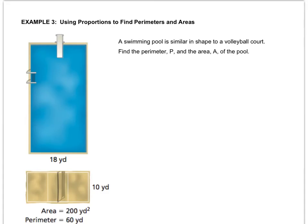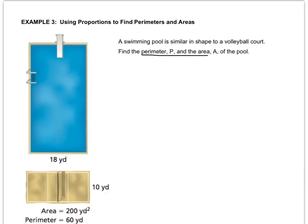Here's how we actually use this information about the relationship between perimeter and area. We've got a swimming pool and a volleyball court, and we're given just a couple of pieces of information: the pool measures 18 yards on one side, the volleyball court measures 10 yards on the corresponding side, the area of the volleyball court is 200 square yards, and the perimeter of the volleyball court is 60 yards. We need to find the perimeter and area of the pool.